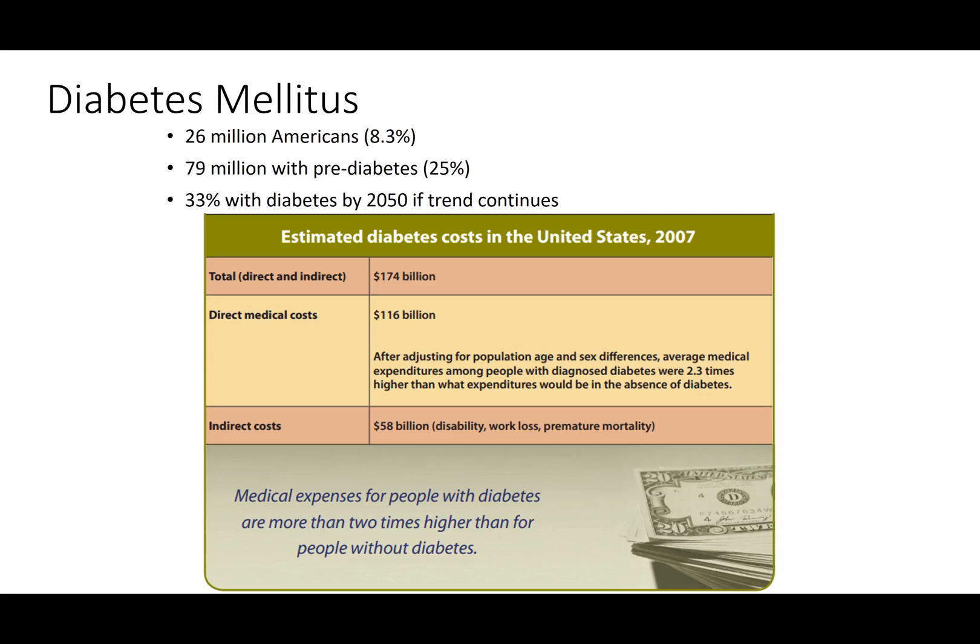Okay, so the cost of this, you know, 26 million Americans, 79 million with prediabetes, and then we'll have 33% by 2050 if the trend continues. And there's just some estimates of the total direct and indirect, and direct medical costs, and indirect costs, just due to other factors associated with it. So it's a big problem. There's a lot at stake there. And so we want to try to design an artificial pancreas to be able to help those that have type 1. Now that's those that are born with this inability to produce insulin.